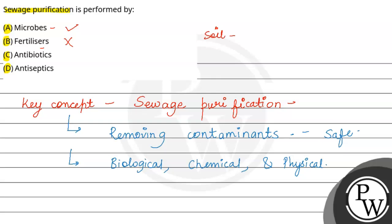Antibiotics basically medicines होता है जो kill करते हैं या inhibit करते हैं growth of bacteria in the body — यह option incorrect है। Antiseptics वो chemicals होता है जो kill करते हैं या inhibit करते हैं growth of microbes on living tissues to prevent infection — यह option भी incorrect होता है। So correct answer है option number A, which says microbes. I hope you have understood the question well. All the best and thank you.